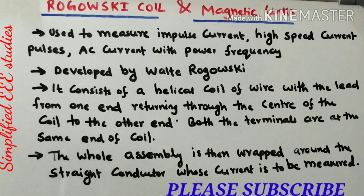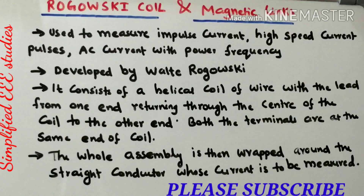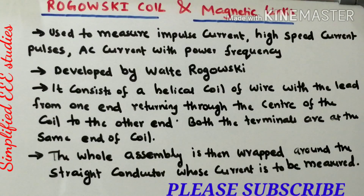The current flowing through the conductor generates an induced EMF at the Rogowski coil. That induced EMF is measured, meaning the moving current is directly proportional to the induced EMF at the Rogowski coil. Let us now explain this with the help of a diagram to make the concept very clear.